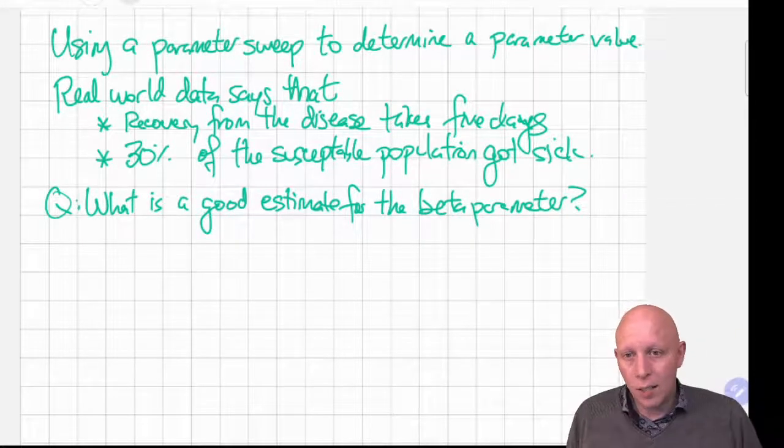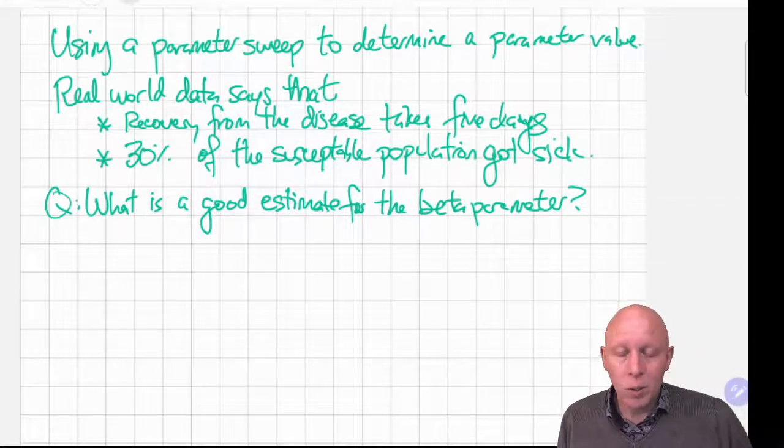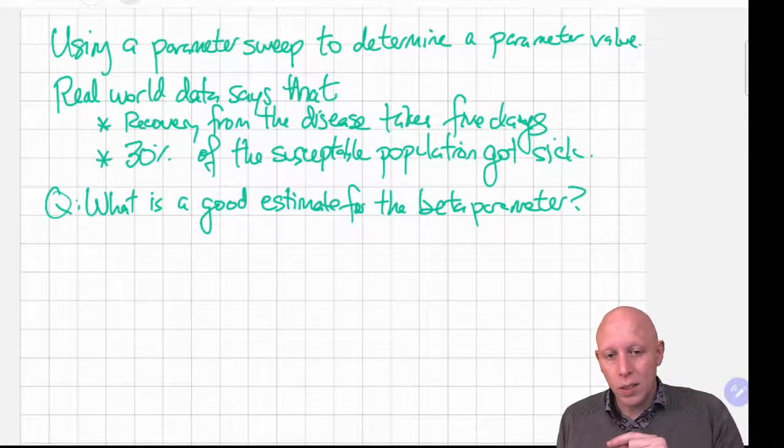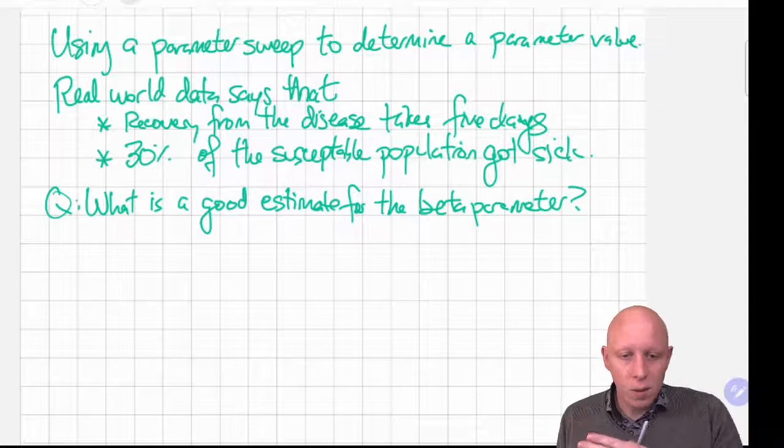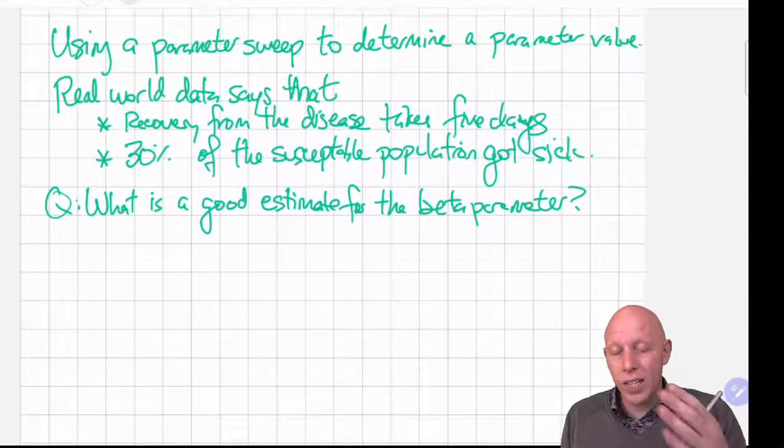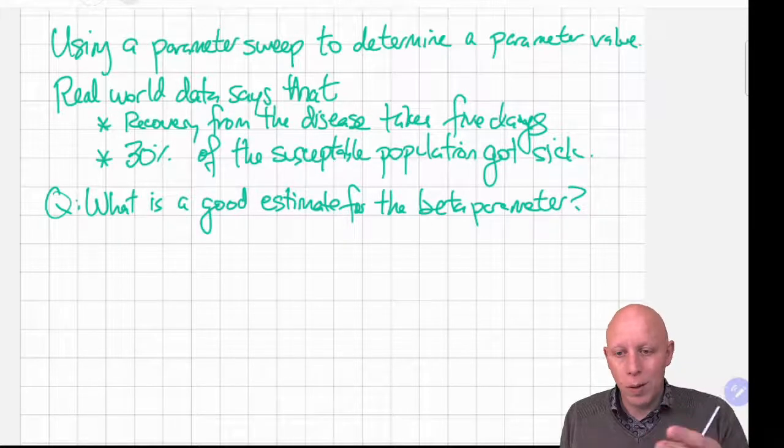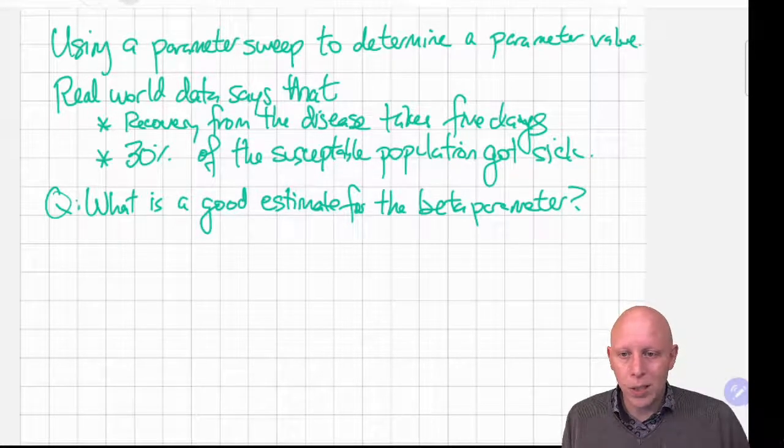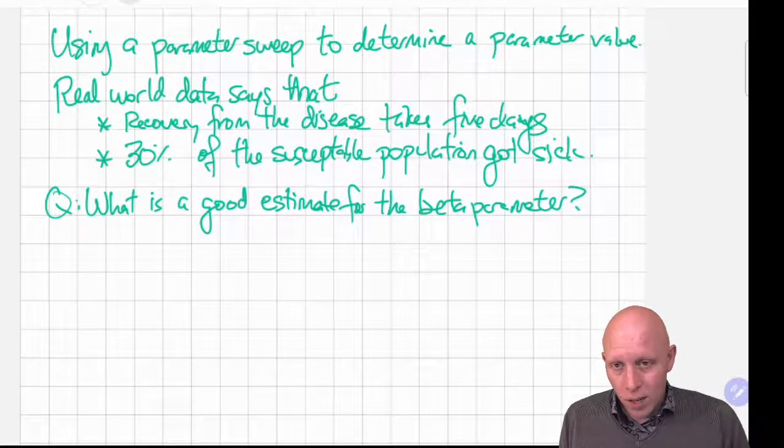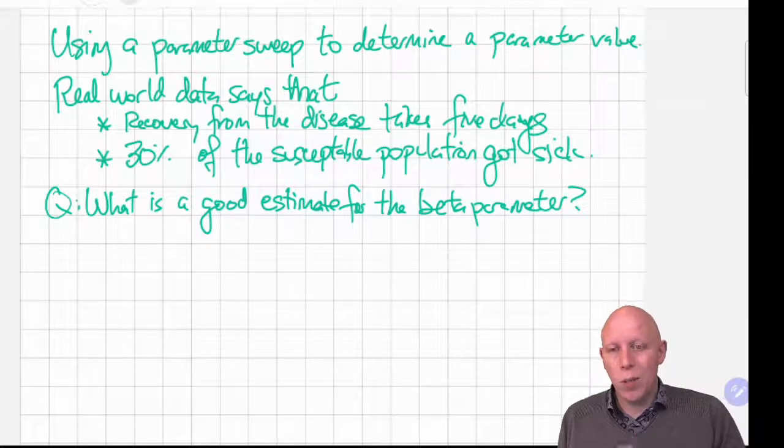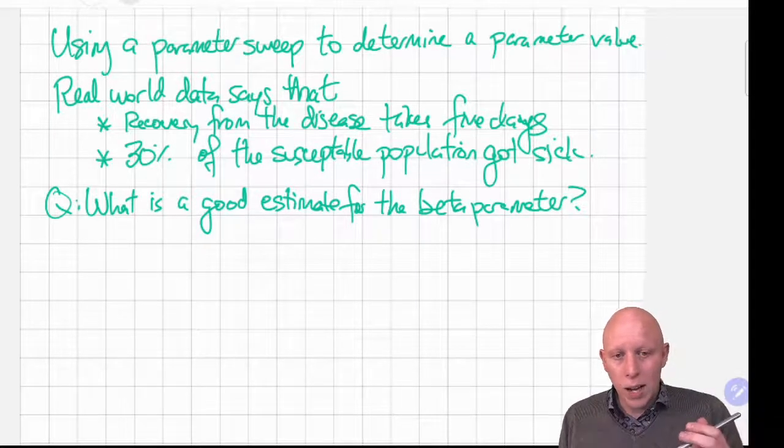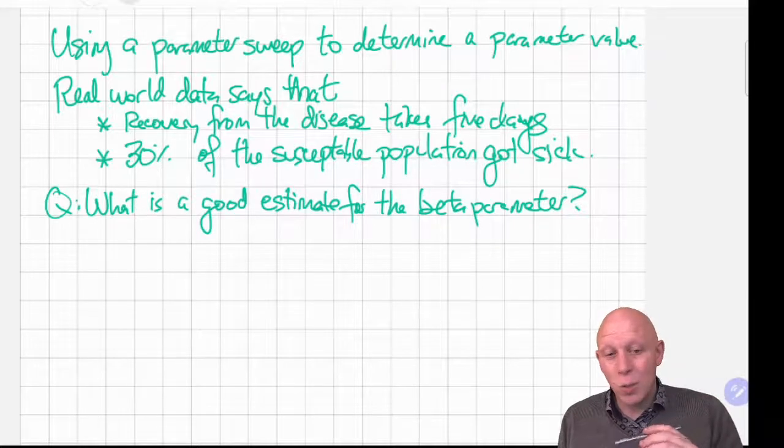Hi, welcome back. Last time we were talking about using a parameter sweep that helps us answer questions such as how a metric depends on some modification of a parameter, for instance the percentage of the population that gets infected or immunized. Now we're going to talk about using a parameter sweep as a tool to determine a value of a parameter that's currently unknown.